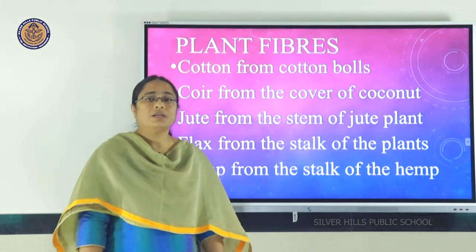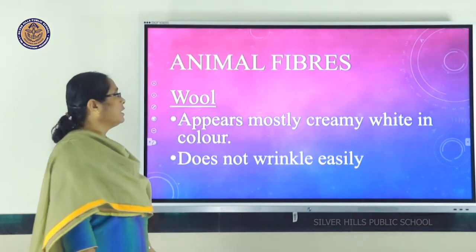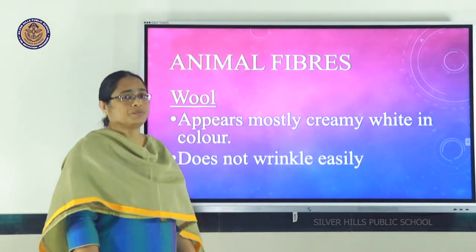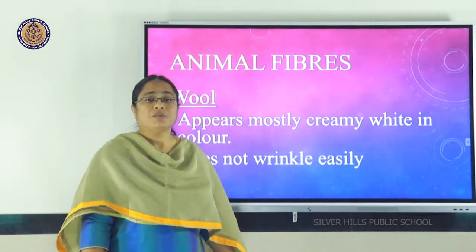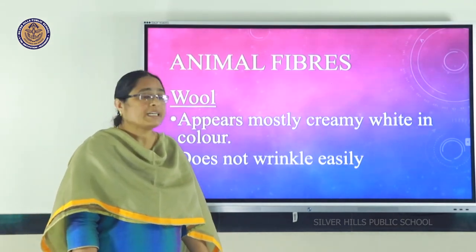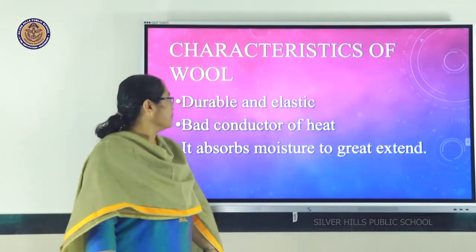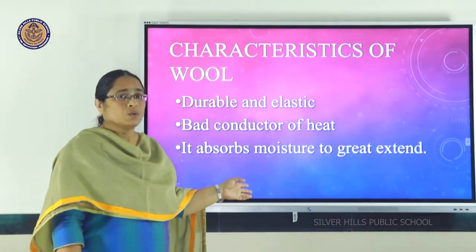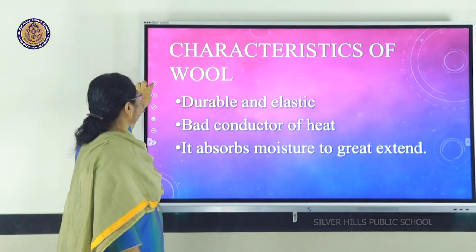Today we are going to learn about animal fibers. Wool and silk are the main animal fibers. When I say the name wool, a sheep with full of fur on its body comes to mind. Wool does not wrinkle easily. The characteristics of wool are: it is durable and elastic, it is a bad conductor of heat, and it absorbs moisture to a great extent.